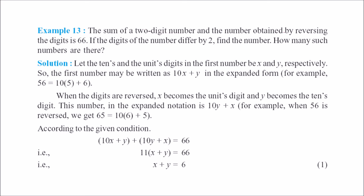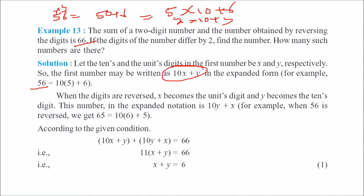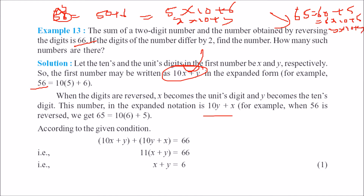Now consider: the sum of a two-digit number and the number obtained by reversing its digits is 66. To represent a two-digit number, take for example 56 — written as 5×10 plus 6, which is 10x plus y if x=5 and y=6. The reversed number 65 is 6×10 plus 5, which is 10y plus x. So the equation is: (10x + y) + (10y + x) = 66, which simplifies to x plus y equals 6.